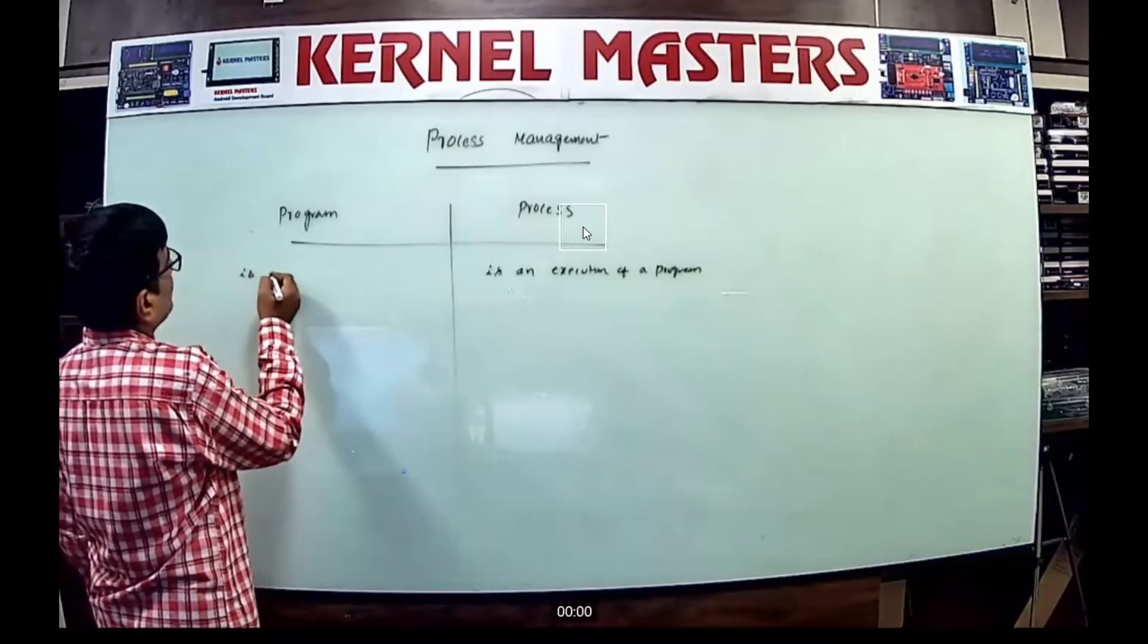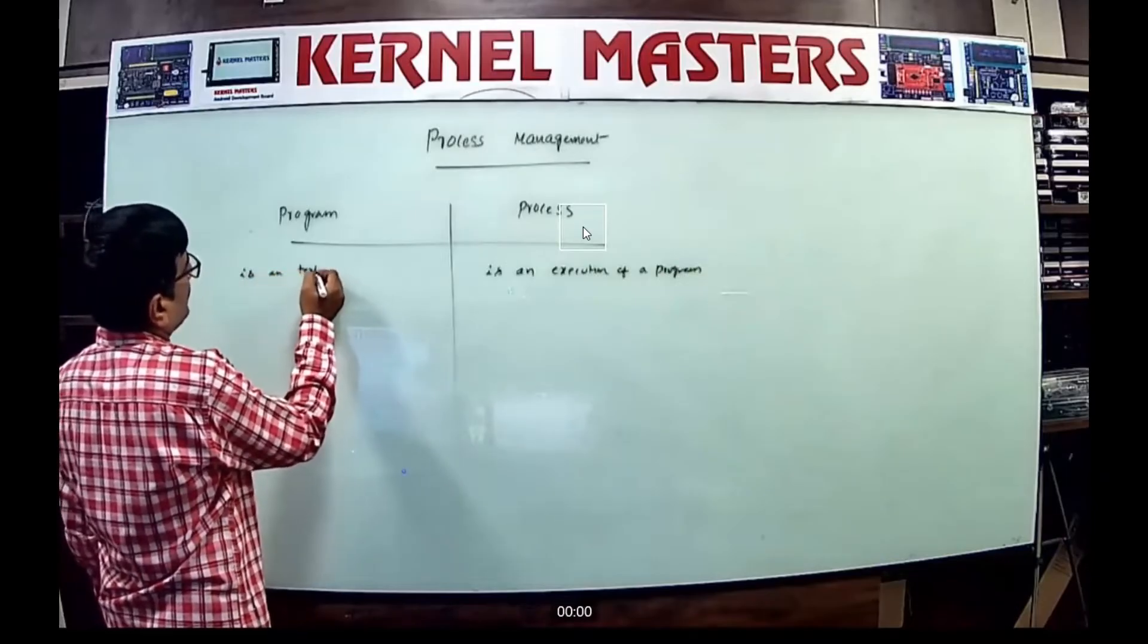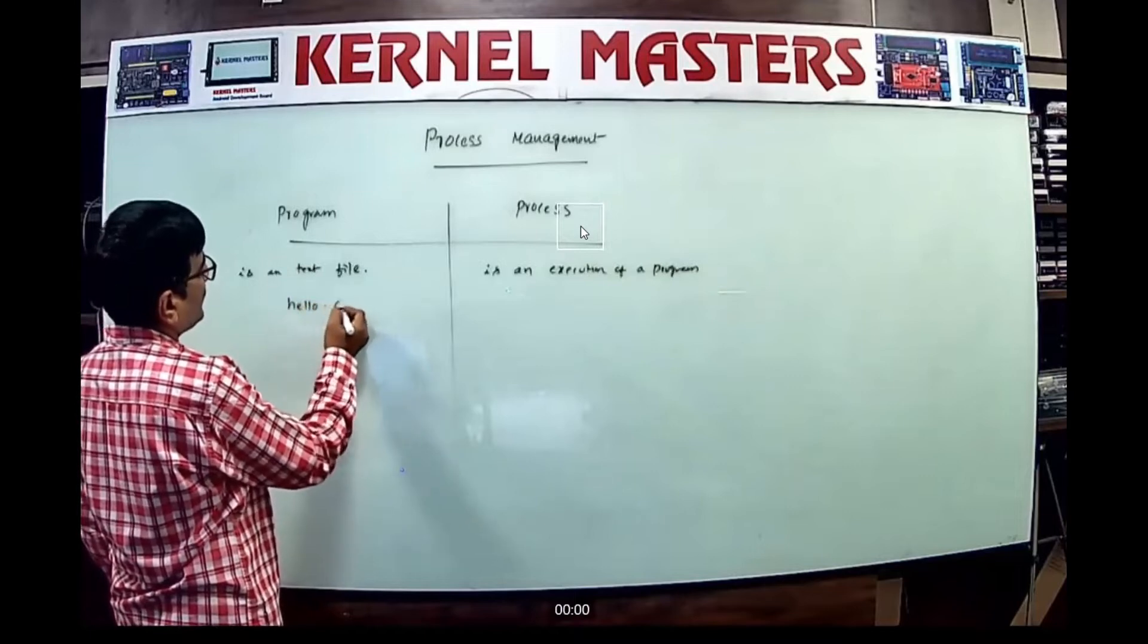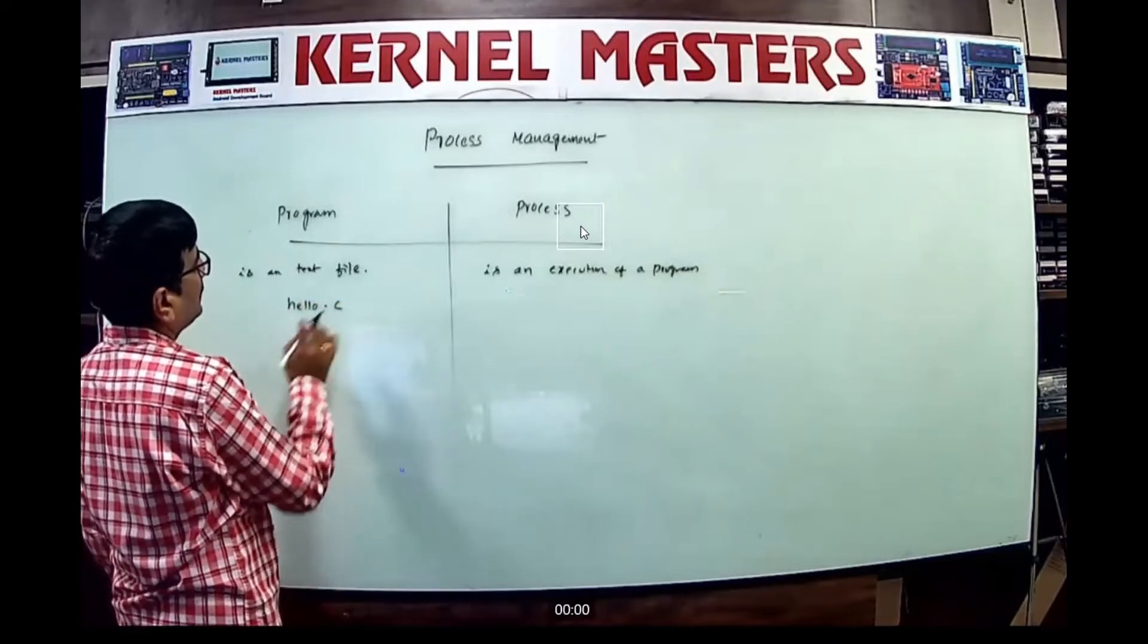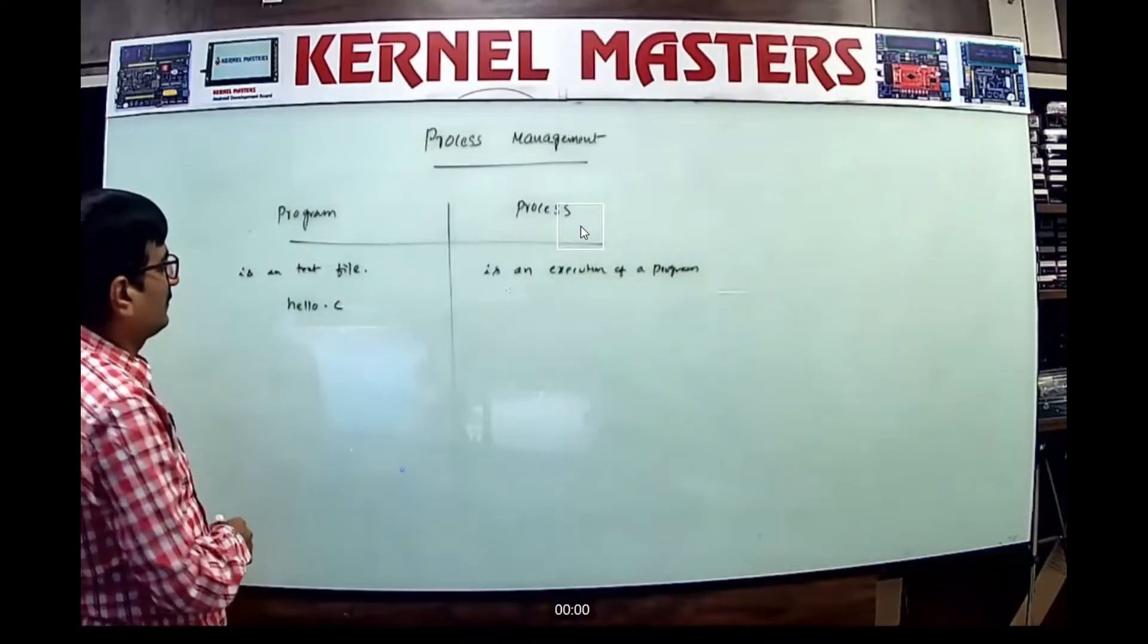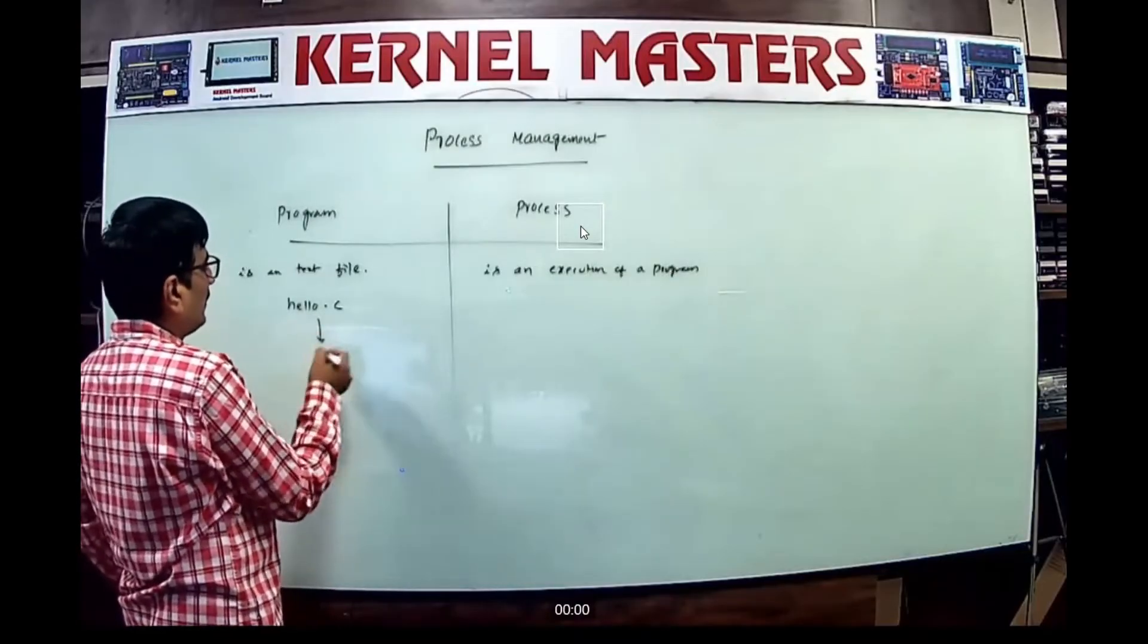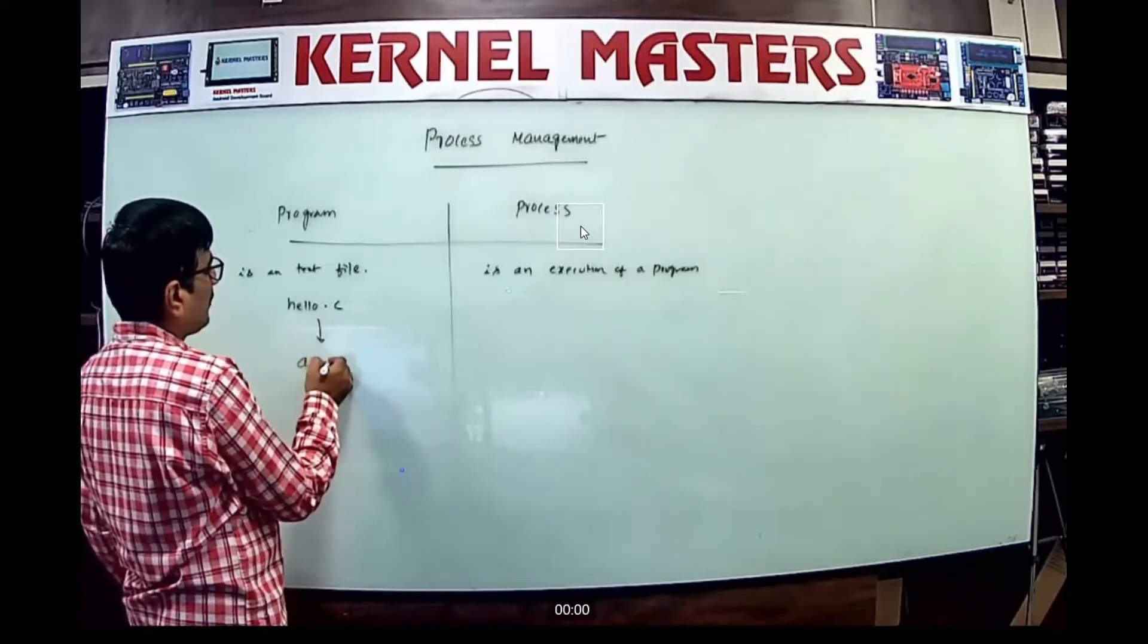A program is a text file, like hello.c, with an extension depending on the programming language. Using a compiler, we convert this text file to generate a binary file called a.out.